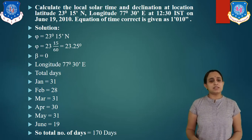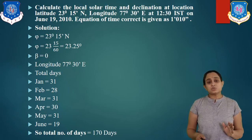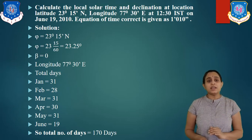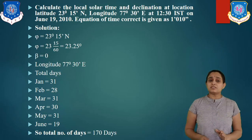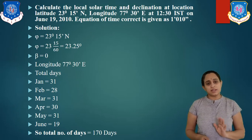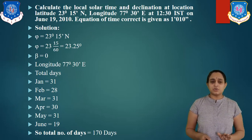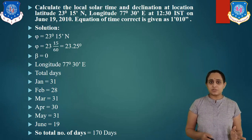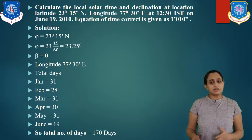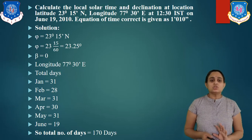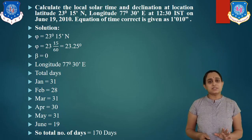Let us calculate the total number of days. We have to consider June 19, 2010. Since 2010 is not a leap year, February has 28 days. So: January 31, February 28, March 31, April 30, May 31, and June 19 days. The total number of days is 170 days.